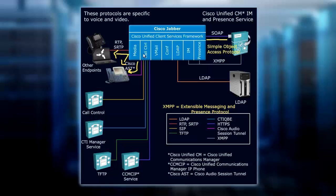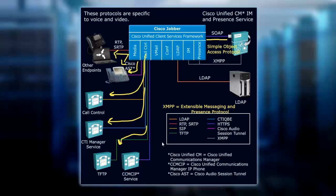With all of our other ties into our Jabra client, we have Communications Manager, member of Client Services Framework, and we might have services that are provided or used by your Jabra client. We've got the TFTP environment set up for all of our phones to actually register and download their config files via the TFTP server. Then we have the CCM CIP service — the Cisco Unified Communications Manager IP phone service. There are lots of protocols on this particular slide specific to voice, video, and presence in our communication solution.